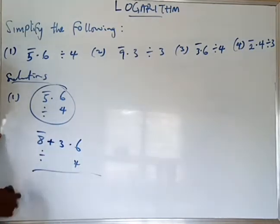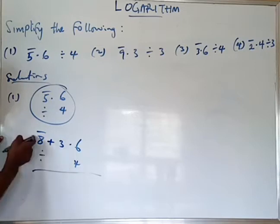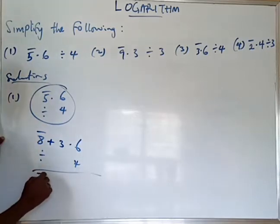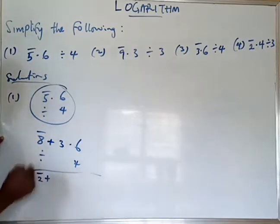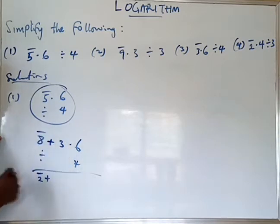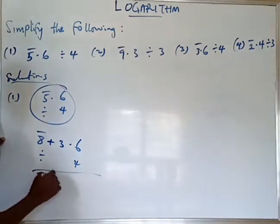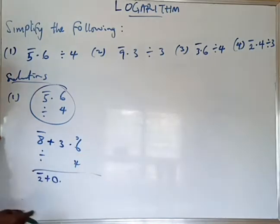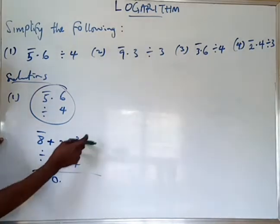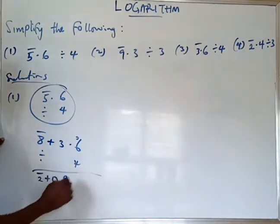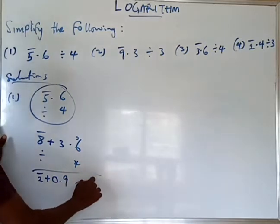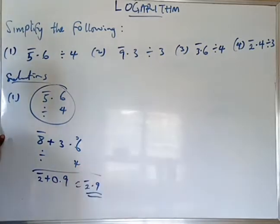Division is now possible. Division starts from the front: 4 into bar 8 gives bar 2. Then 4 into 3 is not possible, so we write zero point and carry the 3, making 36. And 4 into 36 gives 9. So our result here is bar 2.9.